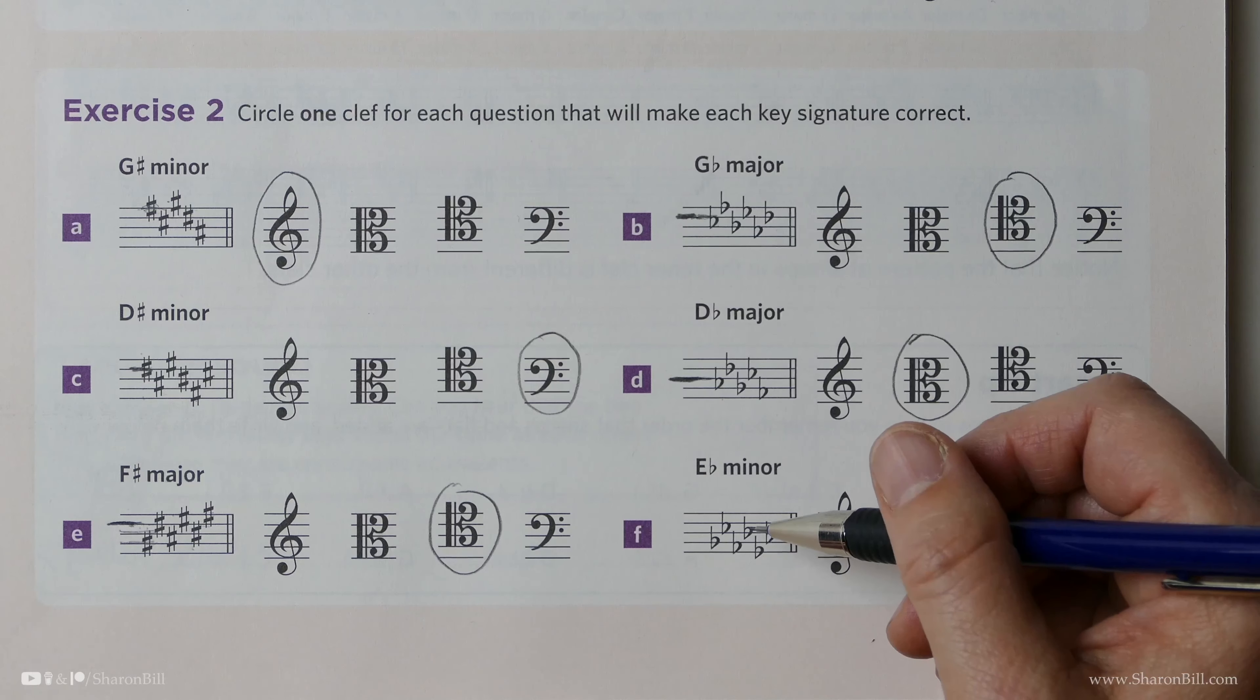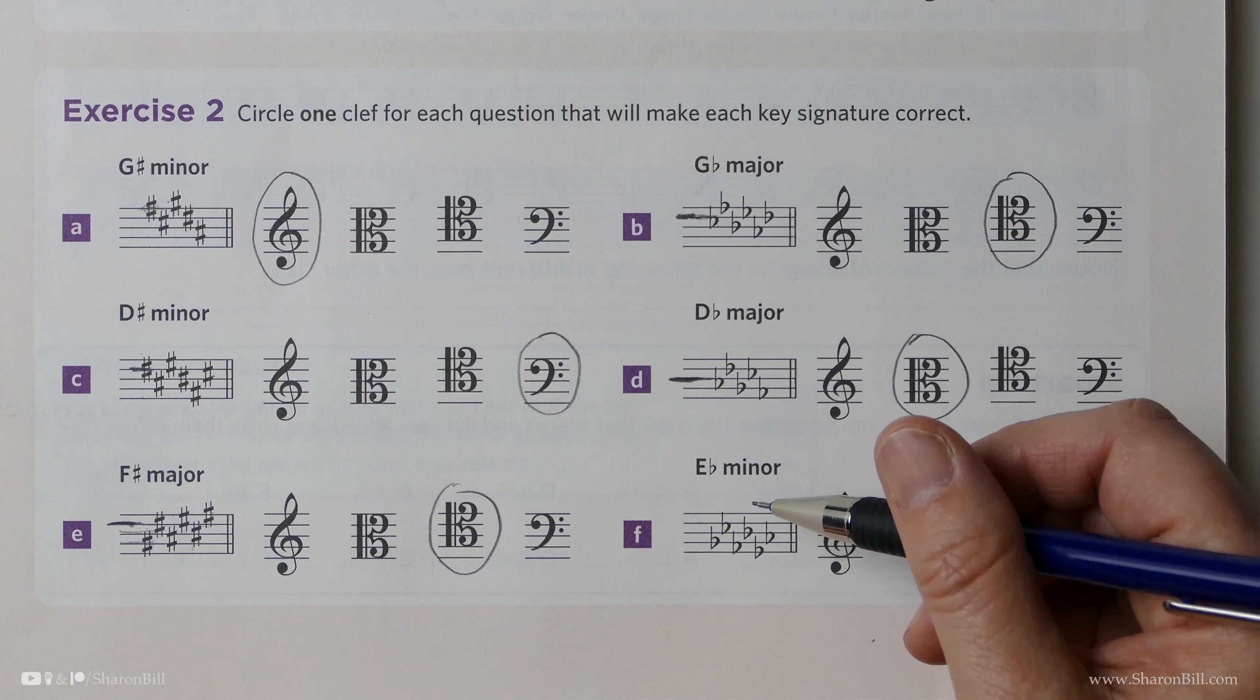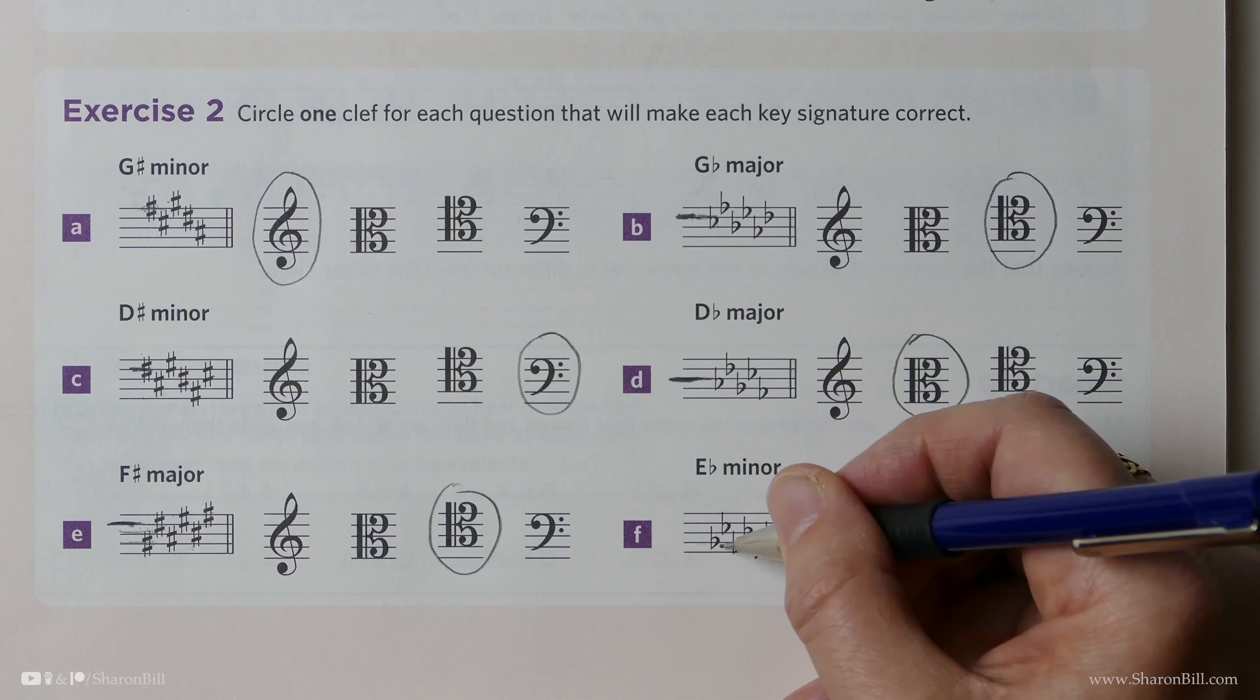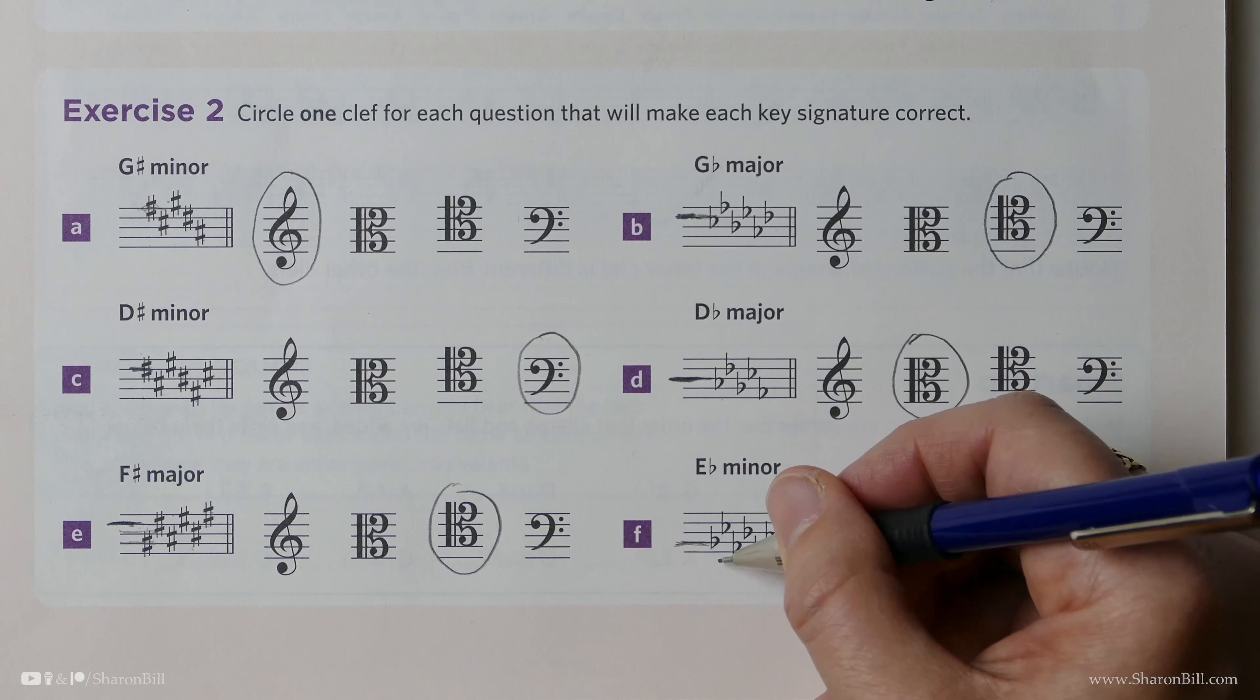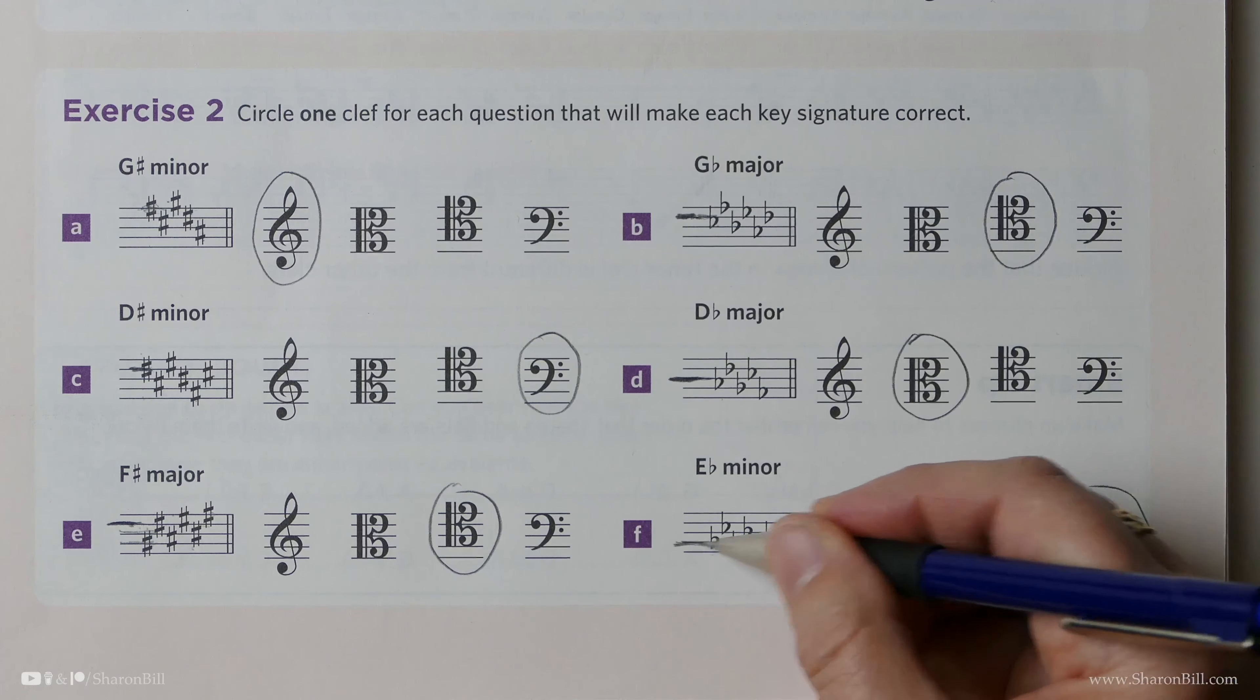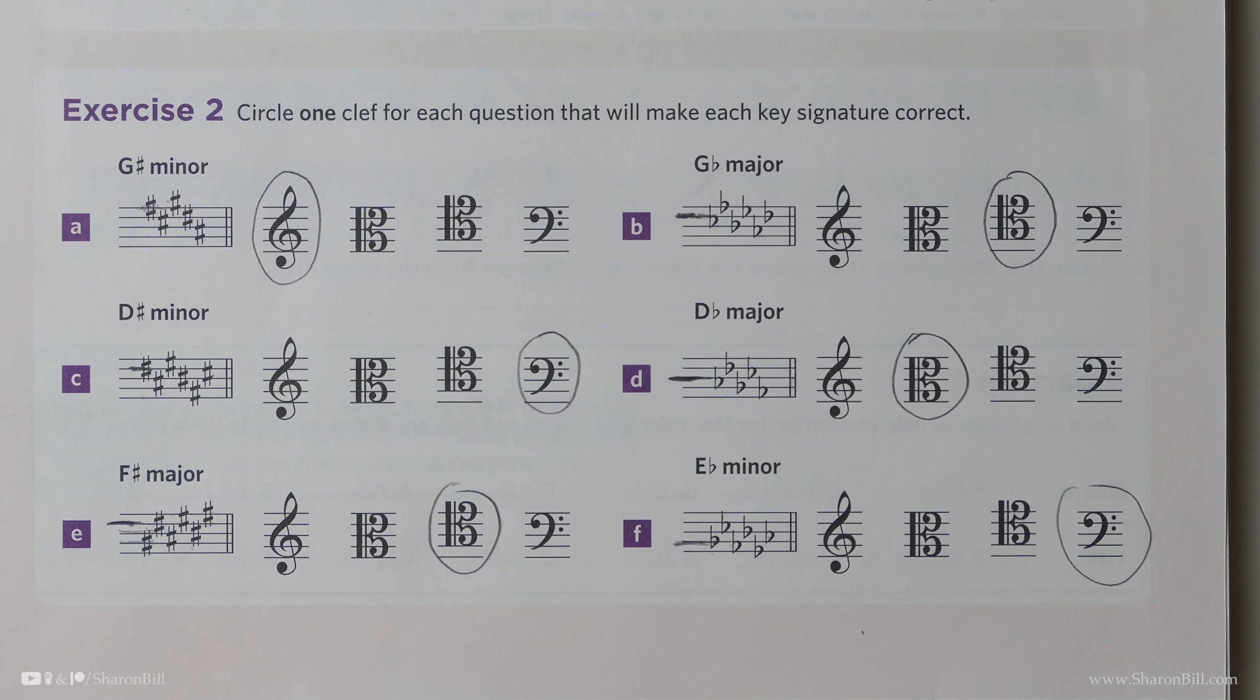And then finally E flat minor is related to G flat major which has a key signature of B, E, A, D, G, C flats but of course this first flat has got to be a B flat and for that to be a B flat it's going to be bass clef good buoys, and then everything else will fall in accordingly so that one is nice and easily completed.